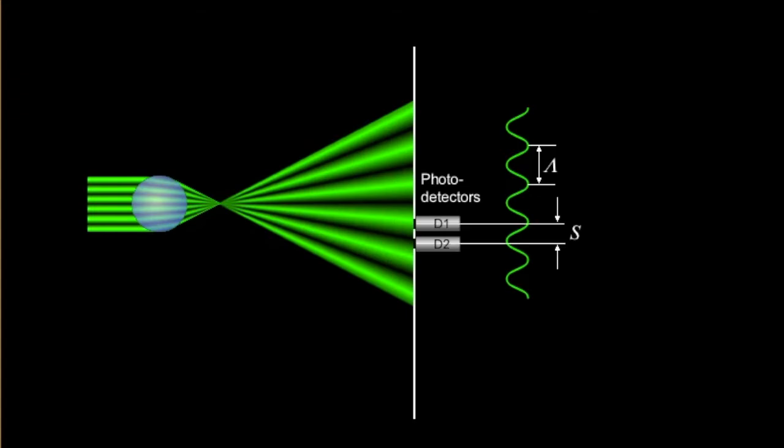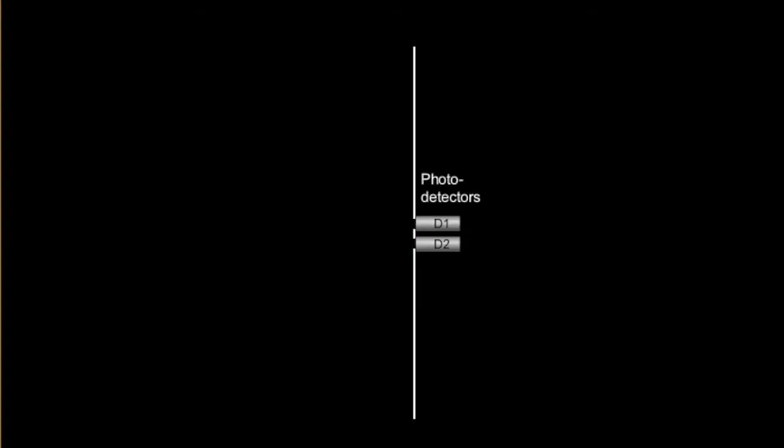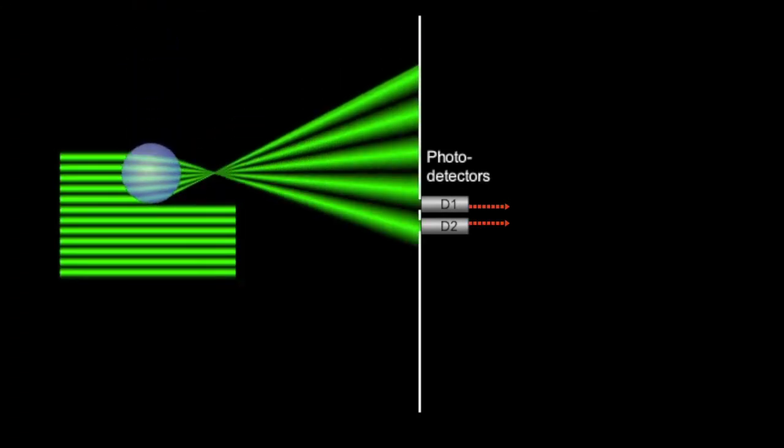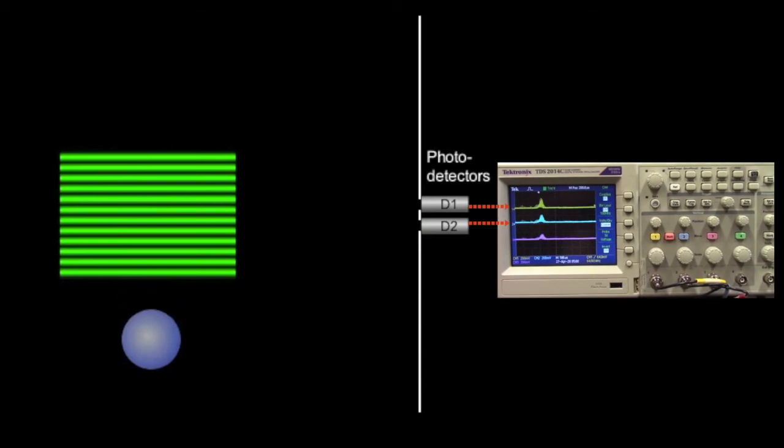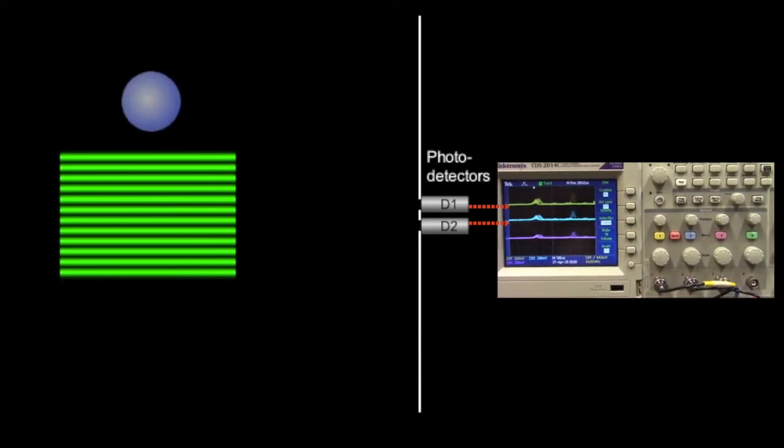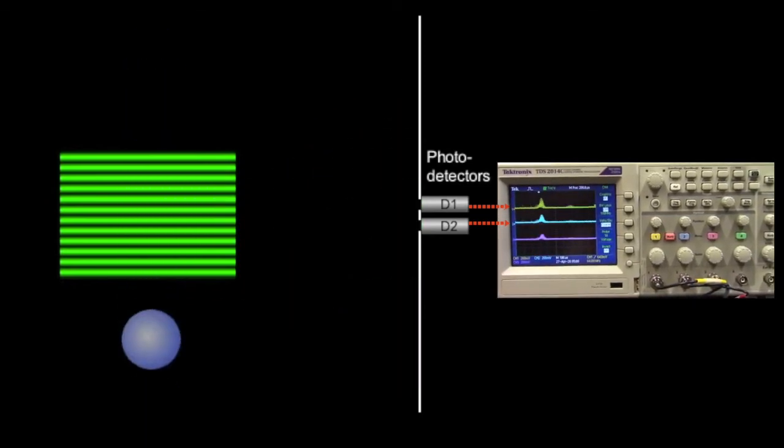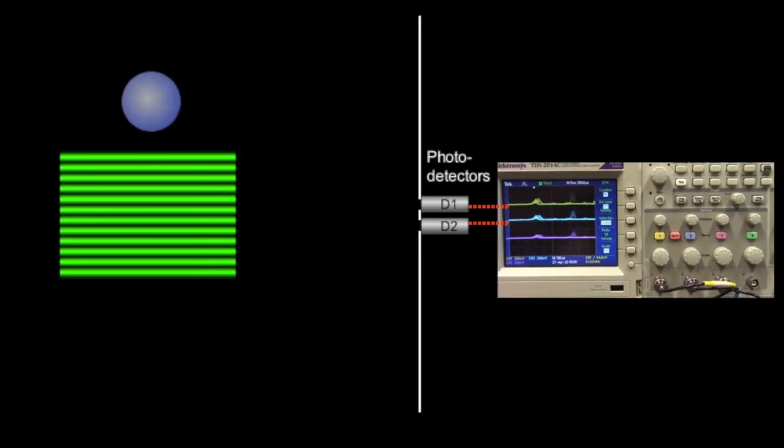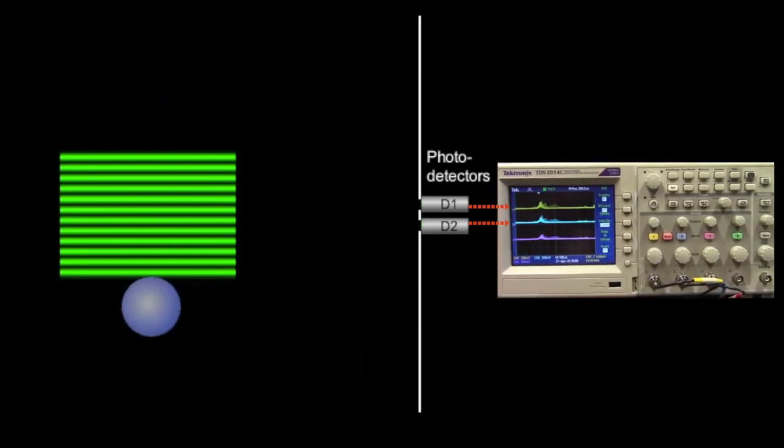In the receiver, we have two or three detectors. And using the phase shift between two or three detectors, we can calculate the magnification of the fringes into the receiver. And from there, we can calculate what the diameter of the droplet is.